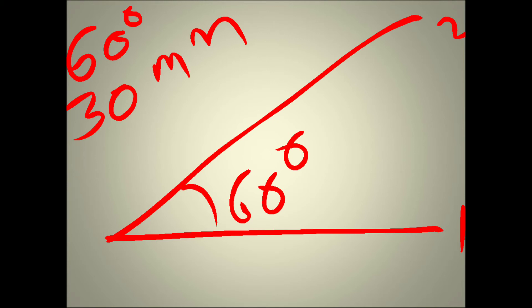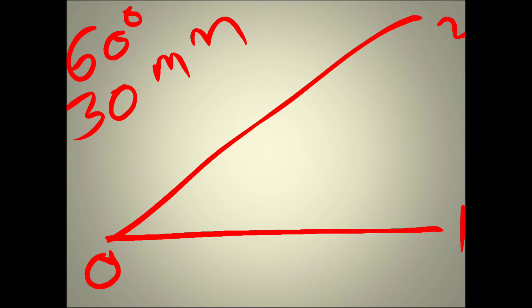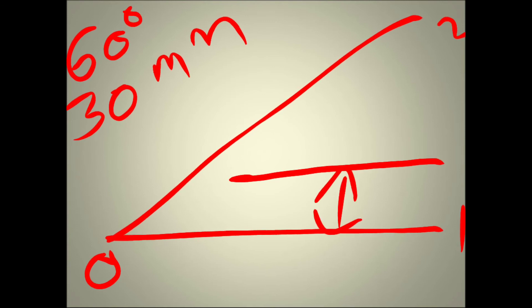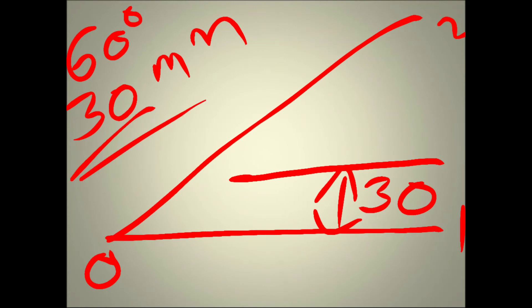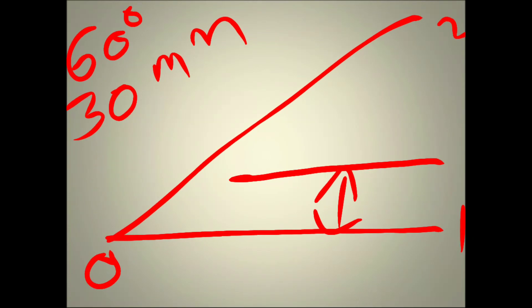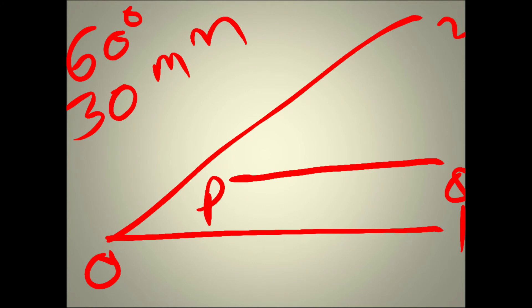Straight line one and straight line two meet at point O. Now draw a line PQ parallel to straight line one at a distance equal to the radius. The distance between these two parallel lines is our radius — 30 mm as given in the problem. This is the line PQ.